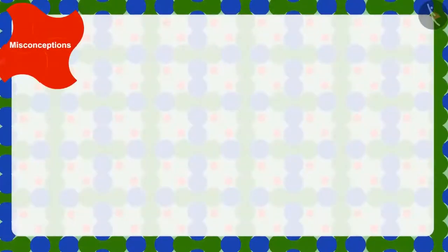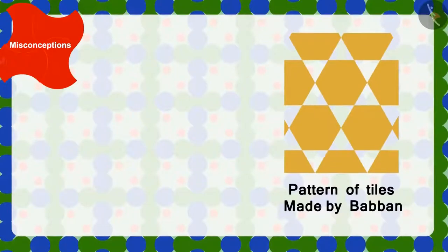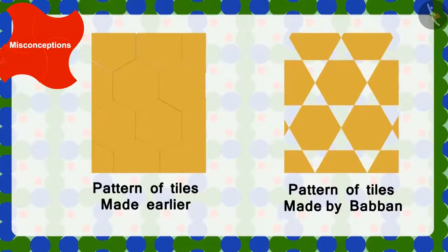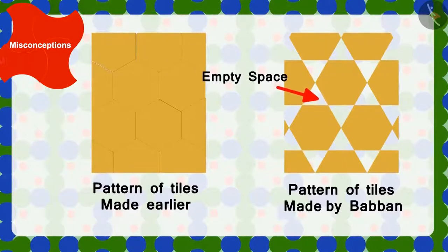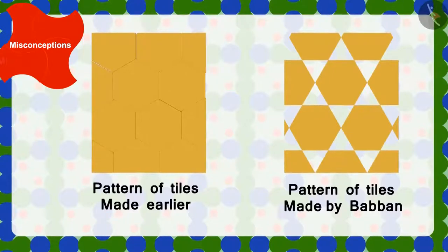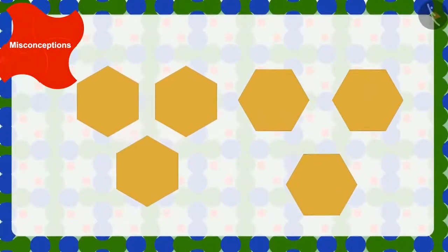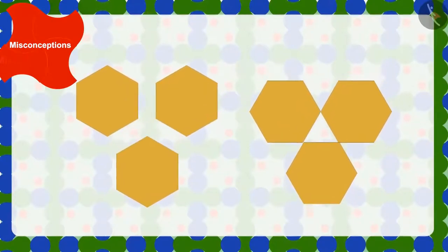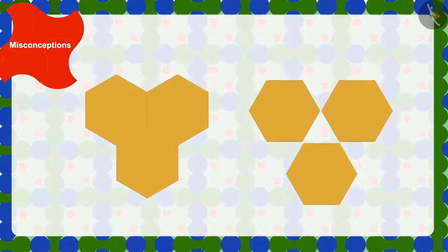But he was not able to understand how the tiles were fixed on the floor. He placed the tile like this and went home happily. Children, can you tell me what is the difference between the pattern of the tiles made by Babban and the pattern of tiles already present on the floor? Yes, in the pattern made by Babban, there is some space between two tiles. Whereas there was no space in the previous pattern of the floor. Babban had used the same tiles that were already fixed on the floor. Then why did this happen? Some shapes are such that they can be joined in only one way, so that no space remains between them.